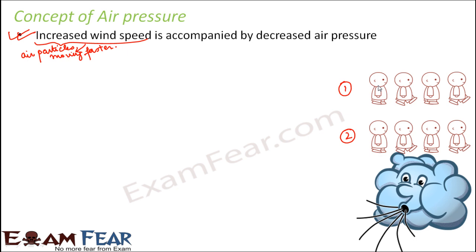But when they are moving so fast, they hardly have any time to exert pressure on anything. When moving slowly, air particles exert more pressure, so air pressure is higher. But when moving very fast, they exert little air pressure. Therefore, increased wind speed is always accompanied by decreased air pressure.